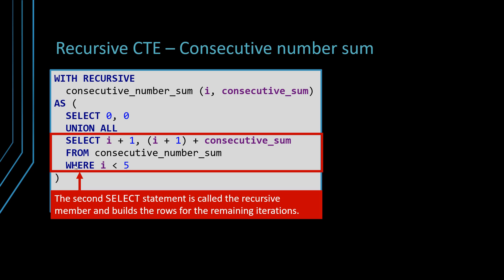which in our case is when the value of the i variable is going to reach the value of five. Until it reaches the value of five, this SELECT statement is going to be executed over and over and over.